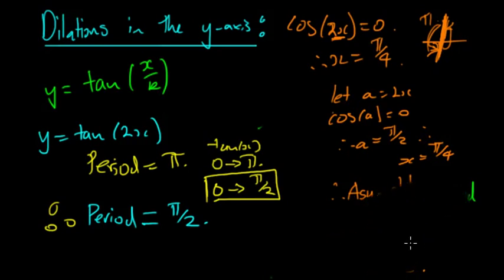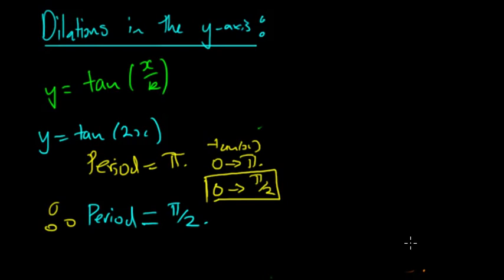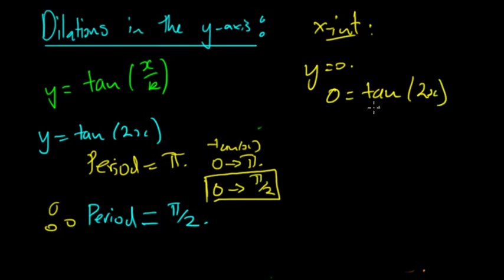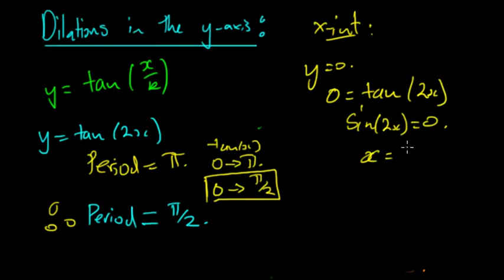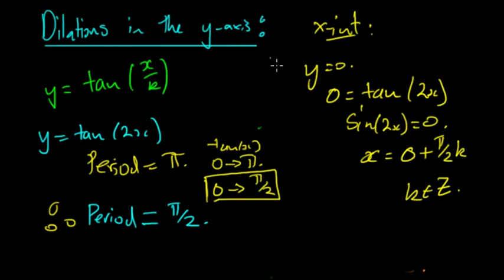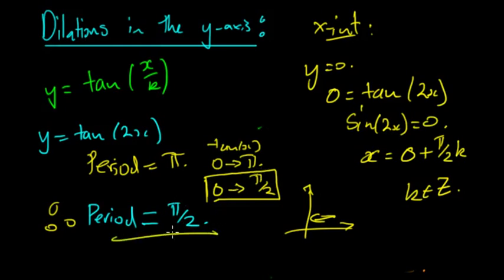The x-intercepts are when y = 0, so we need tan(2x) = 0, which occurs when sin(2x) = 0. The first intercept is at x = 0, and then the general form is x = (π/2)k where k is an integer. Dilating by a factor of half brings the graph closer to the y-axis — everything is shrunk, with period π/2 rather than π.